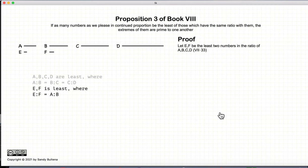So let's prove this. We start off with ABCD, and we find the least ratio, E to F, which has the same ratio as A to B, using Proposition 33 of Book 7.